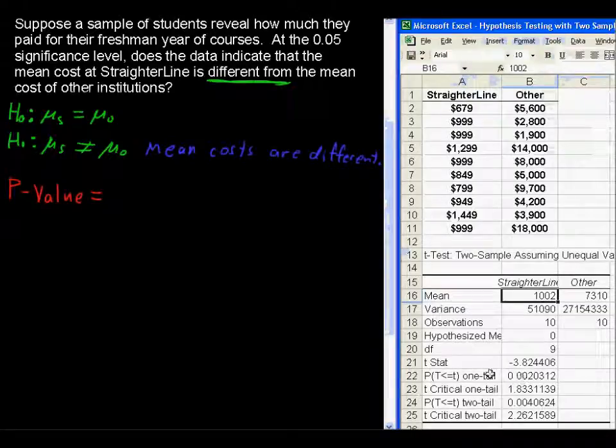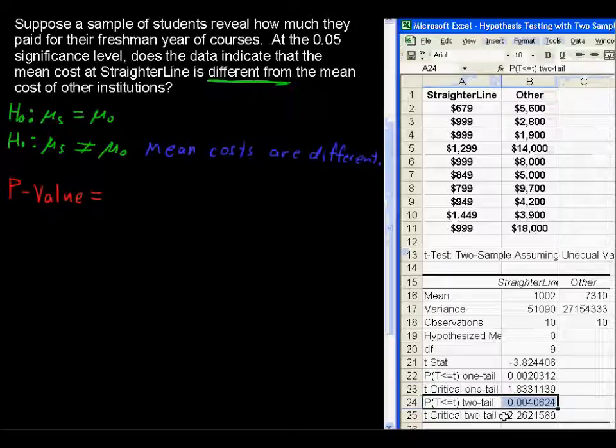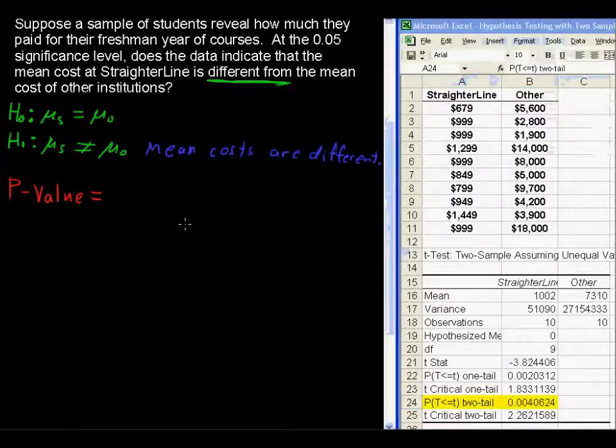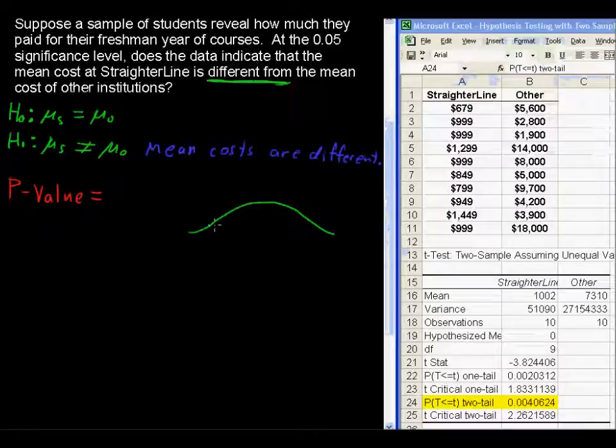Then we have to choose. We've got these two p-values. We are going to choose the two tail, and the reason we're going to choose the two tail is because we have this not equal to. So we are actually looking for whether or not it's possible for some value to end up in this area or this area. So it's the sum, the sum of those two areas, and that's the two tail when we do the not equal to.